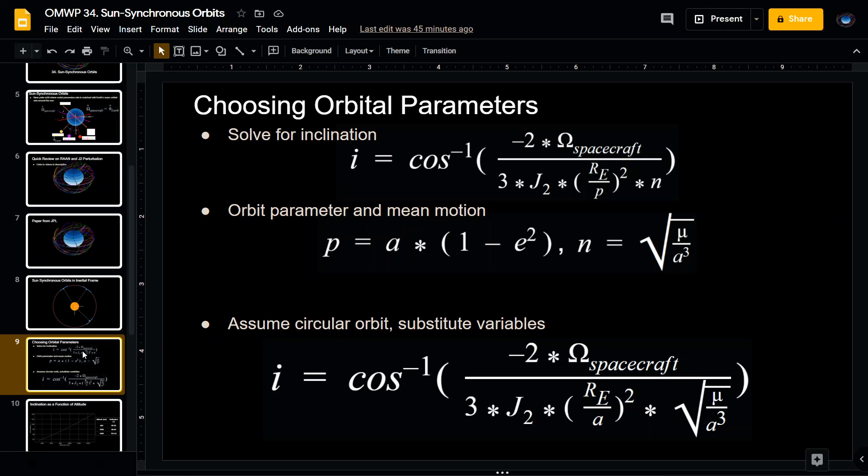As far as how to choose orbital parameters, that equation I showed from that paper, the first thing you want to do is solve for inclination. We get I equals the inverse cosine, negative 2 omega dot spacecraft, 3 J2, the radius of the earth over p squared times n. When you substitute the orbit parameter and mean motion, where we assume that e equals 0 because we're assuming a circular orbit, we say that p equals a, and then the mean motion is defined as the square root of mu over the semi-major axis cubed.